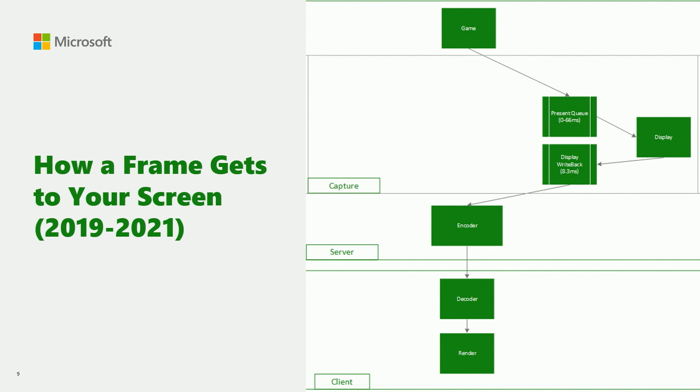But let's zoom back into that capture box. What's happening here is we're using the HDMI display hardware of the Xbox. The first thing it has to do in order to get into that hardware is get through the present queue. Depending on your game, that can take somewhere between 0 and 66 milliseconds, based on things like frame rate and whether you're double or triple buffering, performance, and a couple of other options. After it gets back through the display hardware, it goes through a process called display writeback that gets it into the final buffer that we can encode — that's a fixed 8.3 milliseconds.